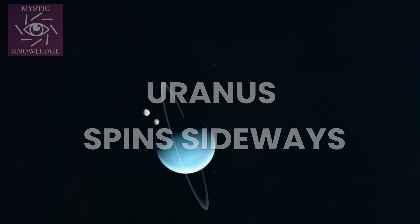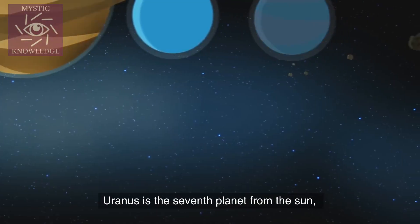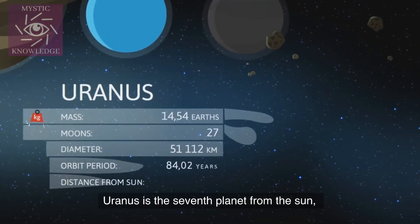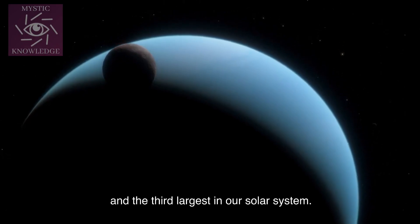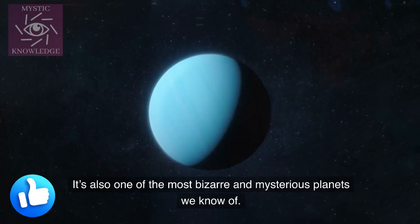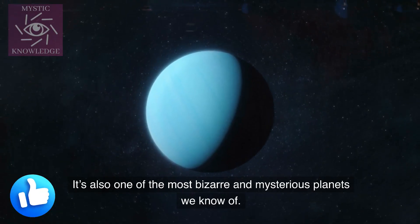Let's start with number 3. Uranus spins sideways. Uranus is the 7th planet from the sun, and the 3rd largest in our solar system. It's also one of the most bizarre and mysterious planets we know of. Why?